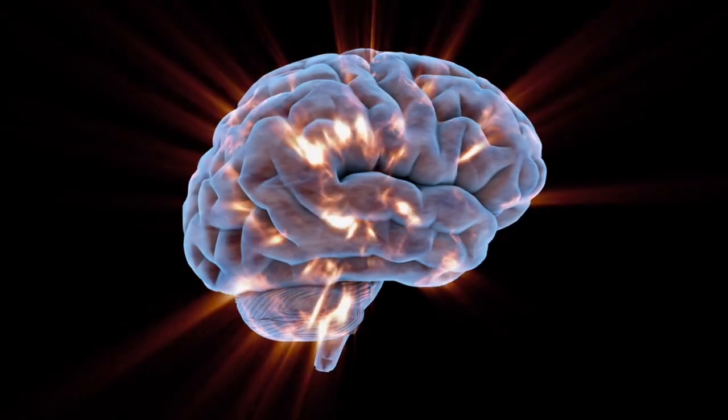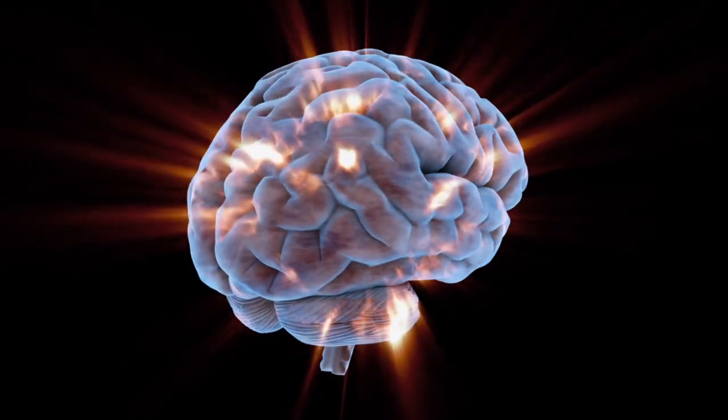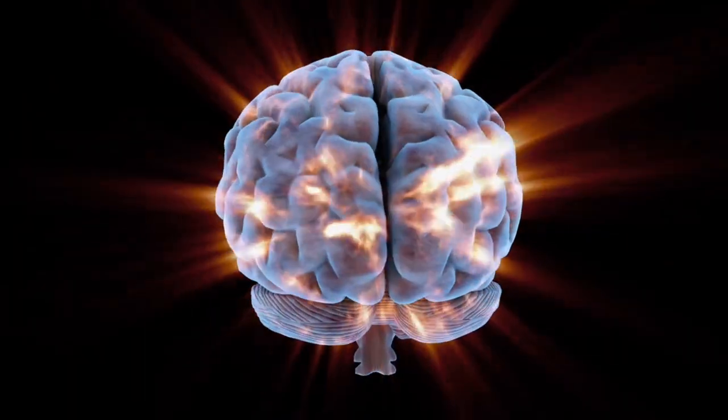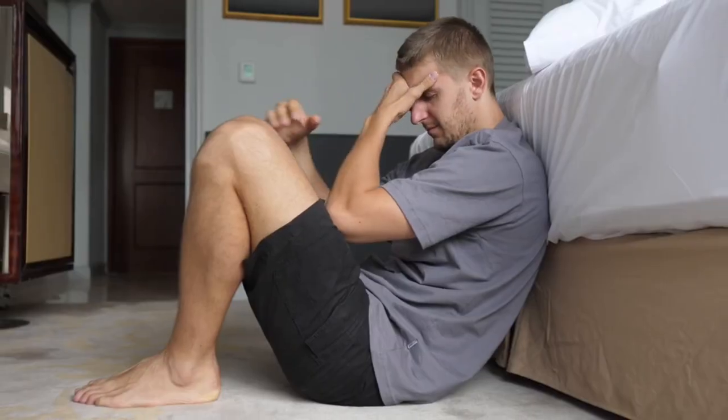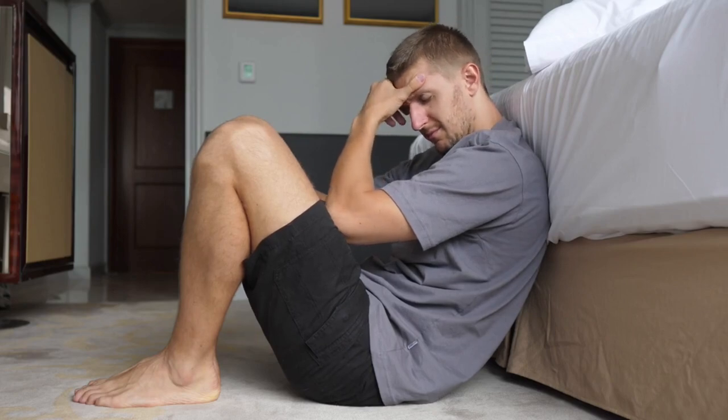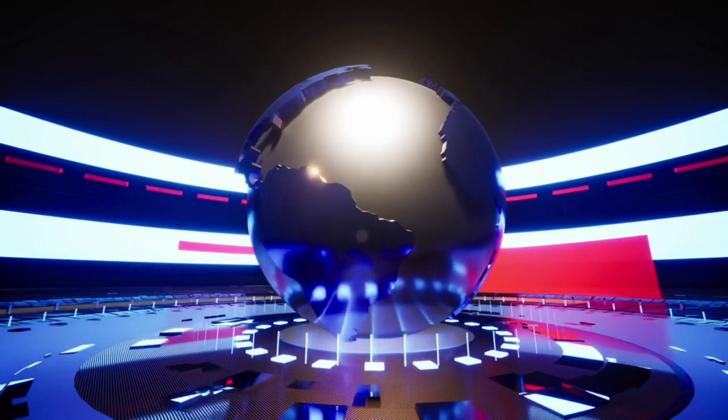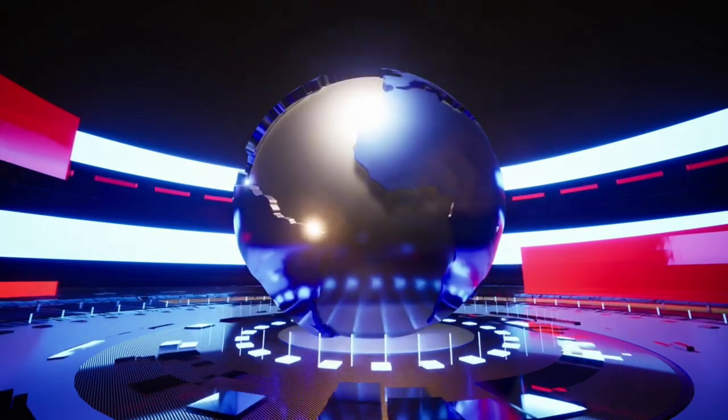So while the brain and the mind may have their unique roles, they are far from independent. They influence and shape each other in a dynamic interplay, a dance of sorts that defines our human experience. The brain, with its tangible neural networks, and the mind, with its intangible thoughts and emotions together, make us who we are. They allow us to perceive the world, to learn and grow, to feel and express, to ponder and create.